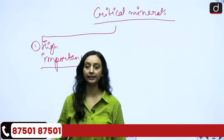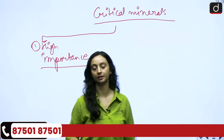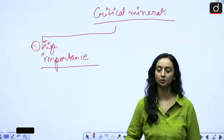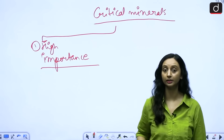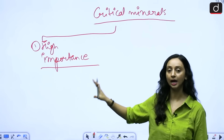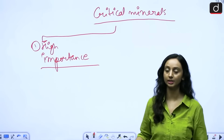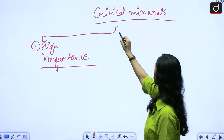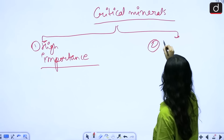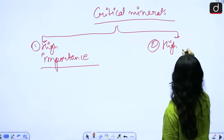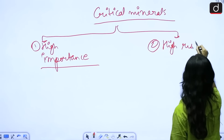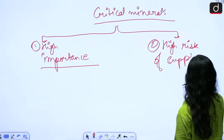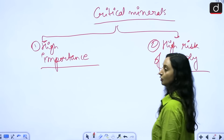Their high importance is particularly in modern sectors like the electric vehicle industry, the semiconductor industry, aerospace industry, defense industry, nuclear industry, etc. They have a high usage in all these industries, which is why they are considered to be critical. Secondly, they are considered critical because of a high risk of supply.